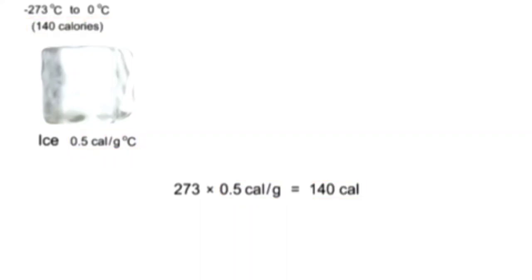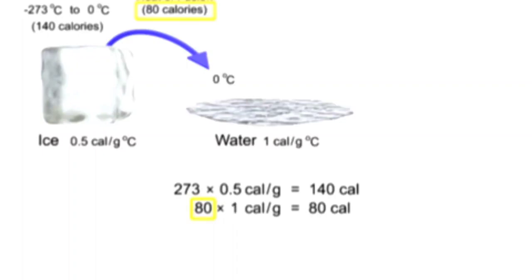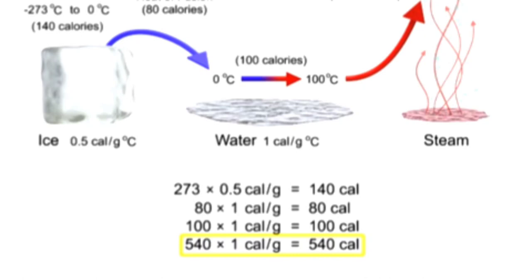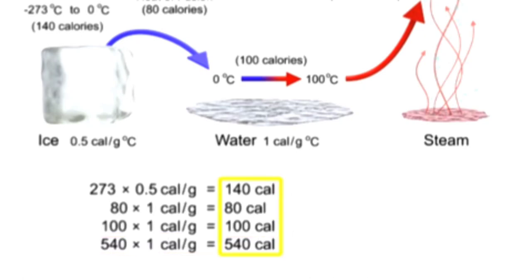The phase change of one gram of ice to liquid water requires 80 calories. Then, to heat the water from zero degrees Celsius to 100 degrees Celsius with a heat capacity of one calorie per gram would require 100 calories. The final phase change of one gram of boiling water to steam would require an additional 540 calories. Adding all of these values together yields 860 calories, the amount of heat energy it takes to transform one gram of ice at absolute zero to steam.